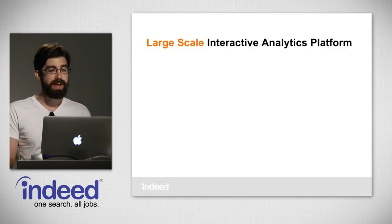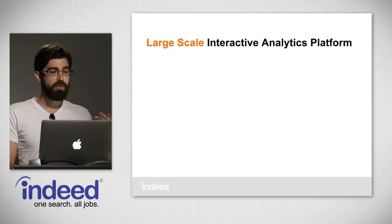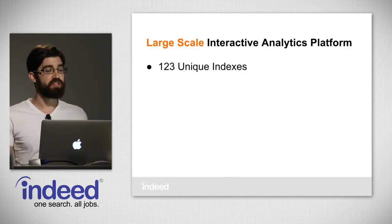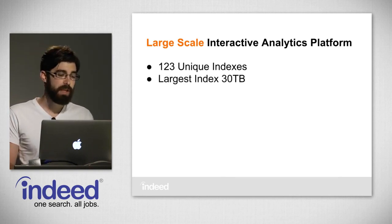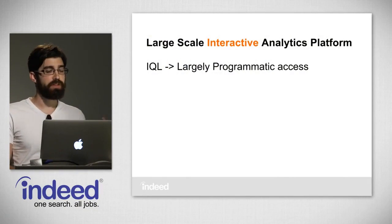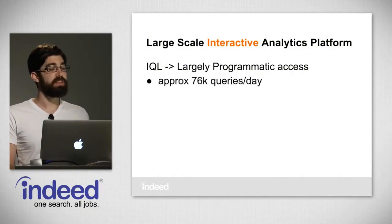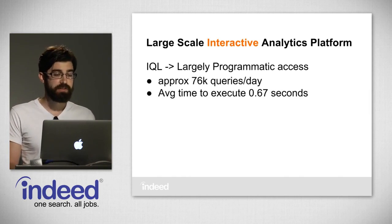I want to go back and iterate through what we were talking about. We call Imhotep our large-scale interactive analytics platform. When we say large-scale, we're talking about the amount of information in it. At Indeed we have 123 unique indexes — all different datasets we have put in there. The largest index is 30 terabytes, and the total size altogether is about 125 terabytes, stored duplicated for redundancy so the total footprint is about double that.